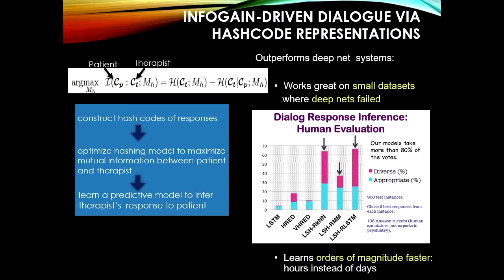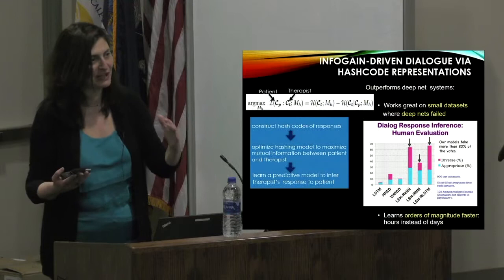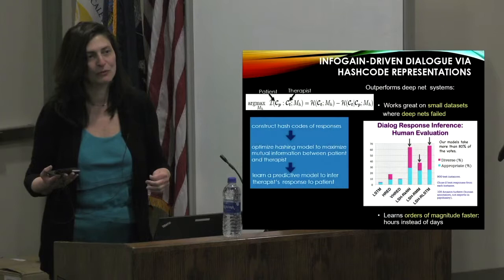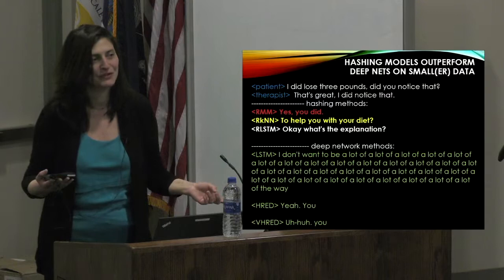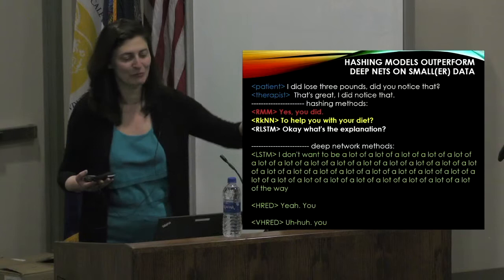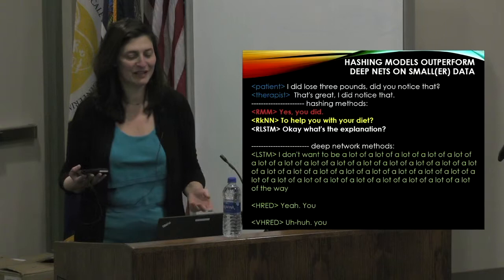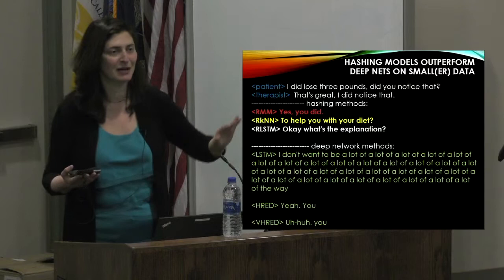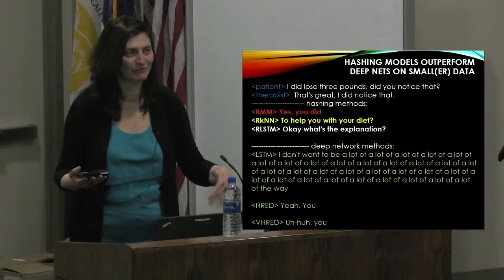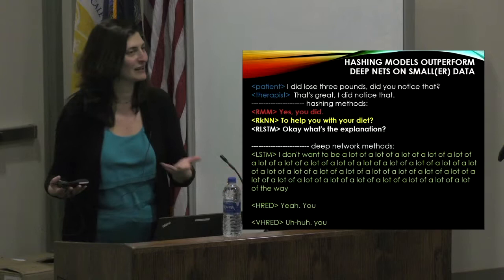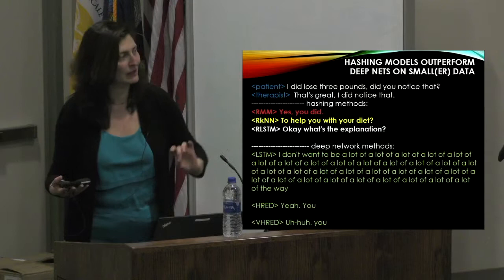We build representations that follow how a therapeutic dialogue should go, and this information-gain-based representation learning leads to dialogue generation rated as much more meaningful by human evaluators on Mechanical Turk compared to state-of-the-art deep network baselines. An LSTM-based model could not learn from this dataset — only about 40,000 samples — since deep learning requires millions. Deep learning is not a silver bullet in many applications.